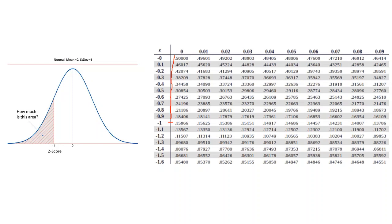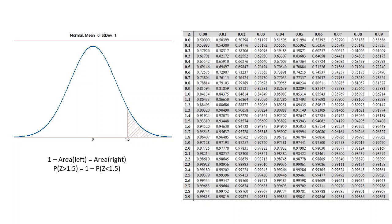Or we can say that the proportion of z less than negative 1 is equal to 0.15866. We can also use the standard normal table to determine the area to the right of any z value. All we have to do is take 1 minus the area to the left. According to this table, the z-score of 1.5 has an area of 0.93319 to the left of it, so 1 minus 0.93319 gives us an area of 0.06681.